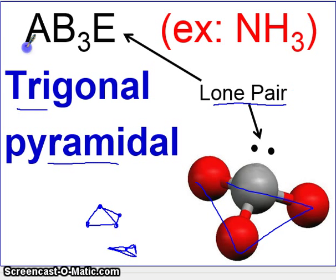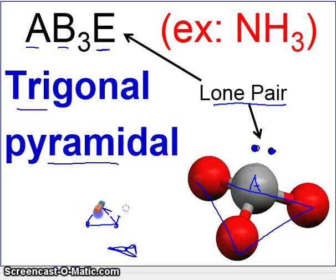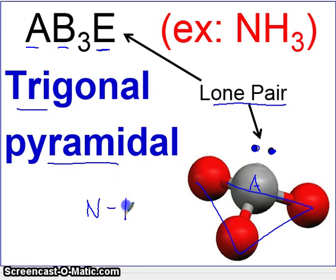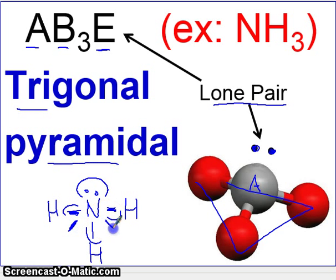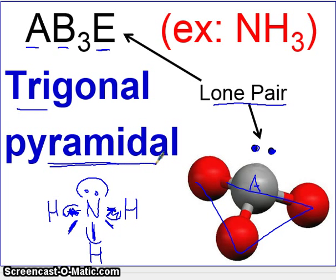Here you have one A atom, three B atoms, and an E — the E refers to a pair of electrons. The example is NH₃. Notice you have three areas of electrons but also an extra lone pair. This extra lone pair will push these bonds down away from it, and they become oriented downward, giving you the trigonal pyramidal arrangement. You'll see this in three dimensions in class, and it'll make more sense. The next shape is Tetrahedral.